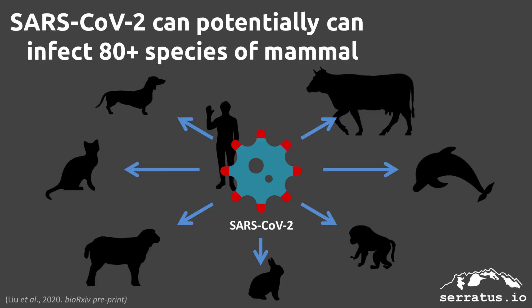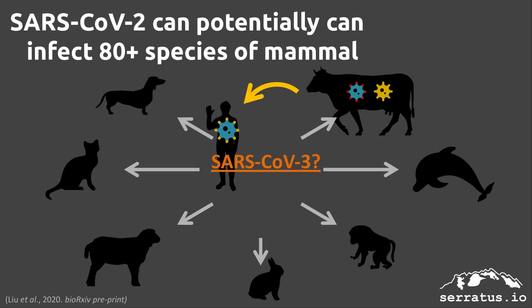Studies on the ACE2 receptor predict that SARS-CoV-2 can infect over 80 species of mammals. If SARS-CoV-2 infects these animals, it can recombine with other coronavirus species. The resulting virus can mean that current vaccines are rendered ineffective, or worse, can lead to a secondary pandemic.